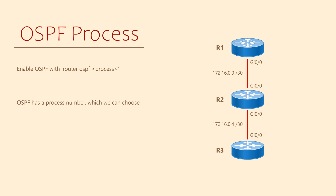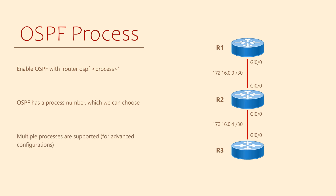This can be any number from 1 to 65535. At the CCNA level it doesn't matter what number you choose. The reason we have a process number is to support advanced configurations — in some cases we need to run more than one OSPF process. But one process is plenty for us, so we'll stick with that.